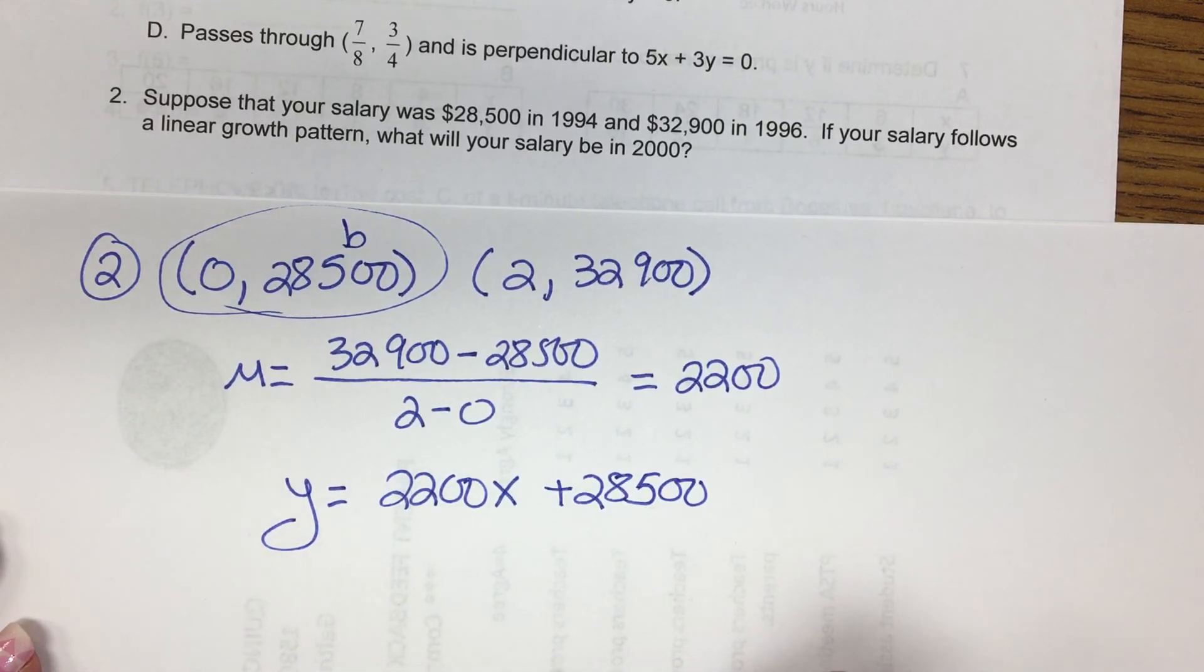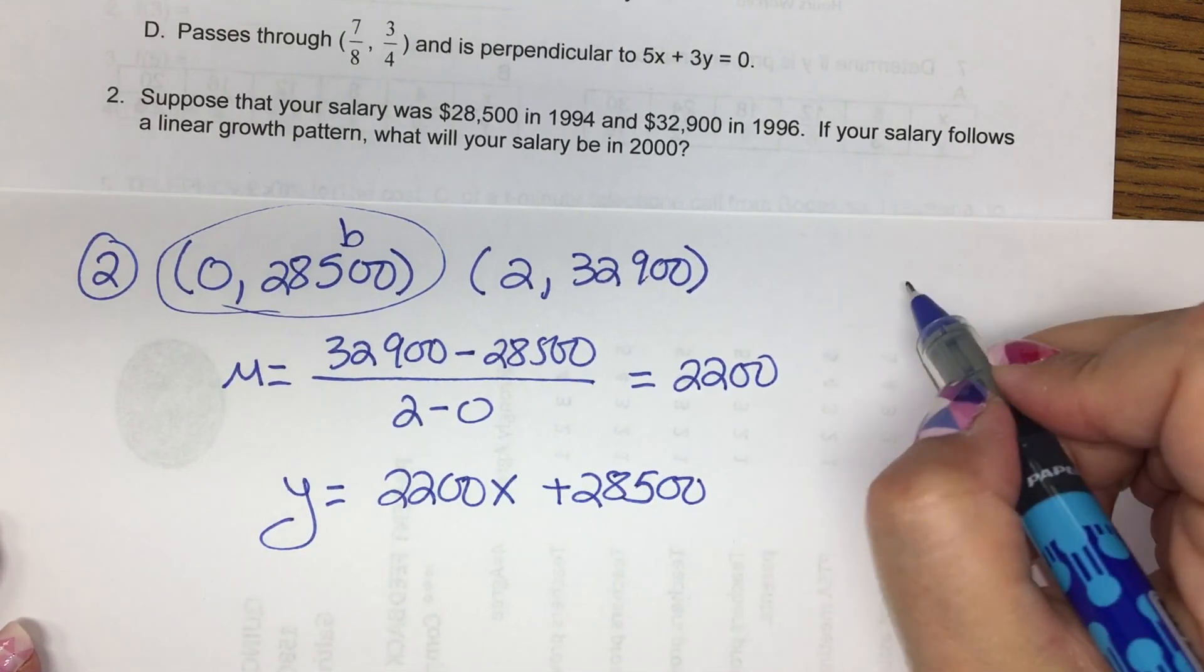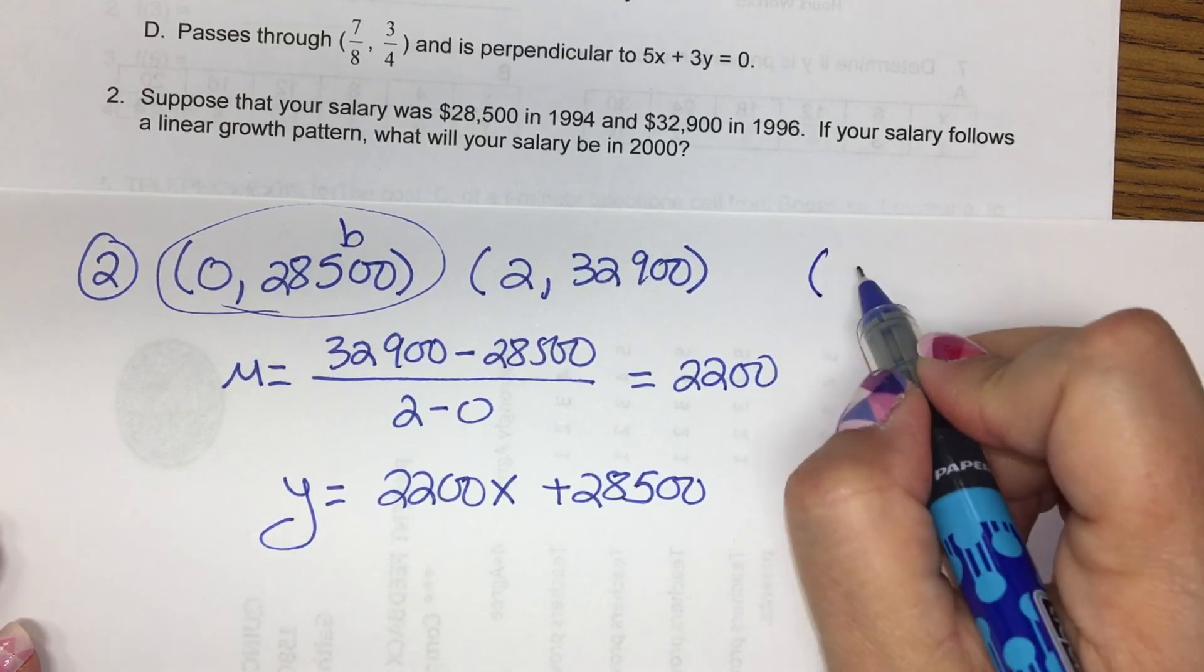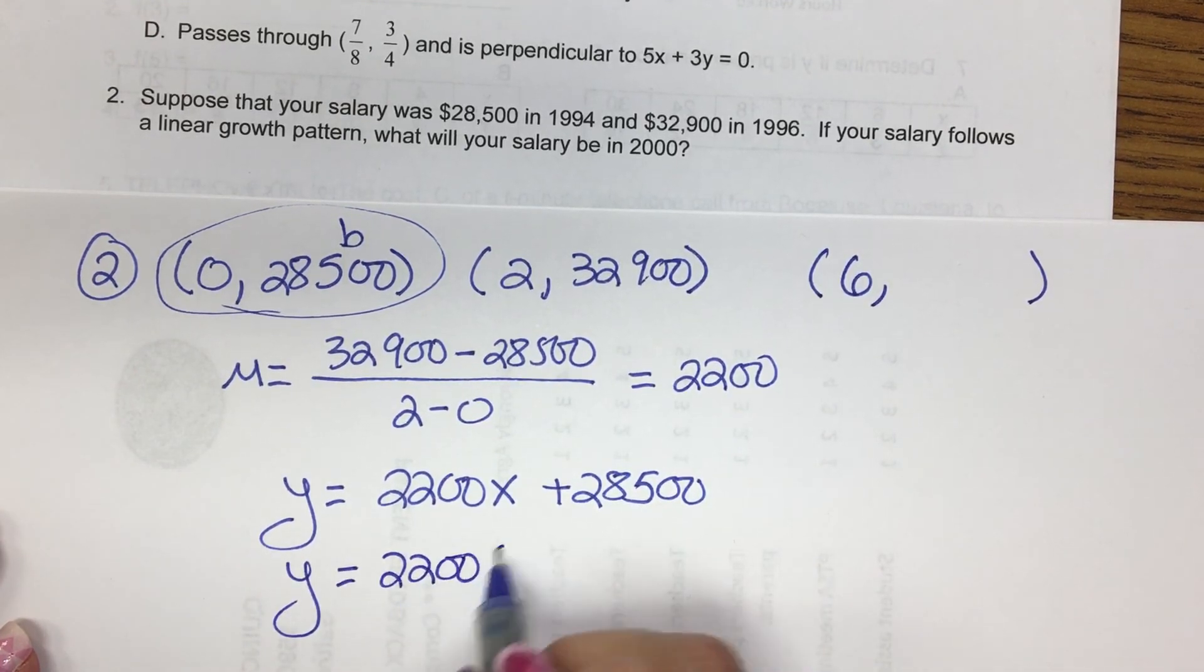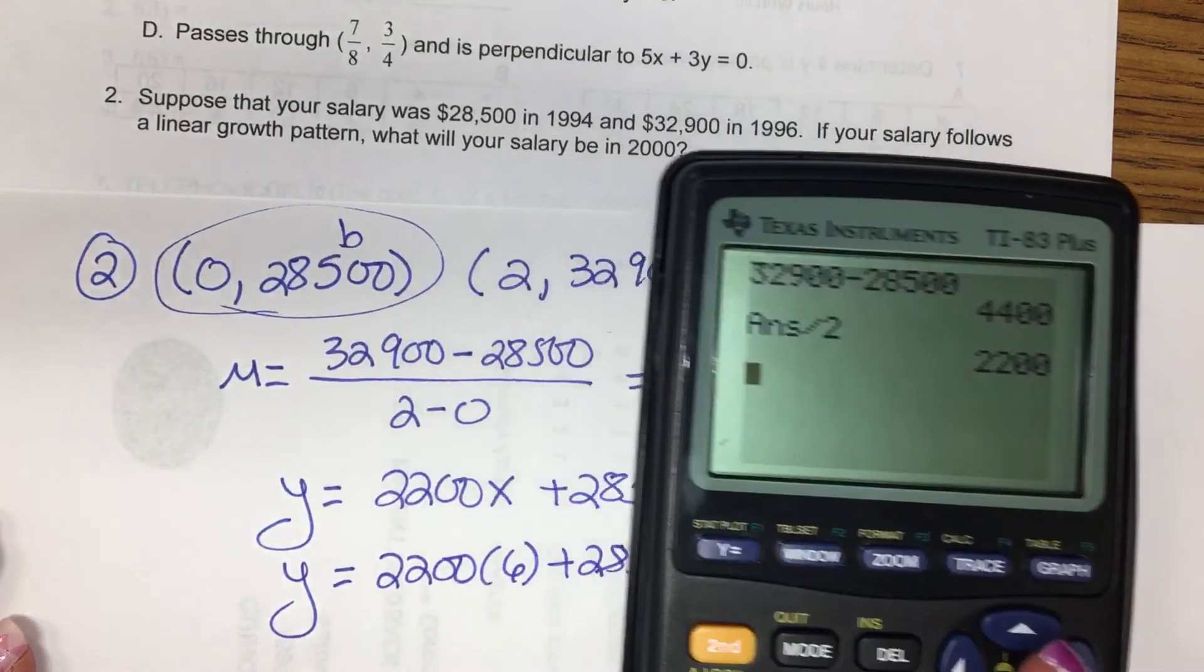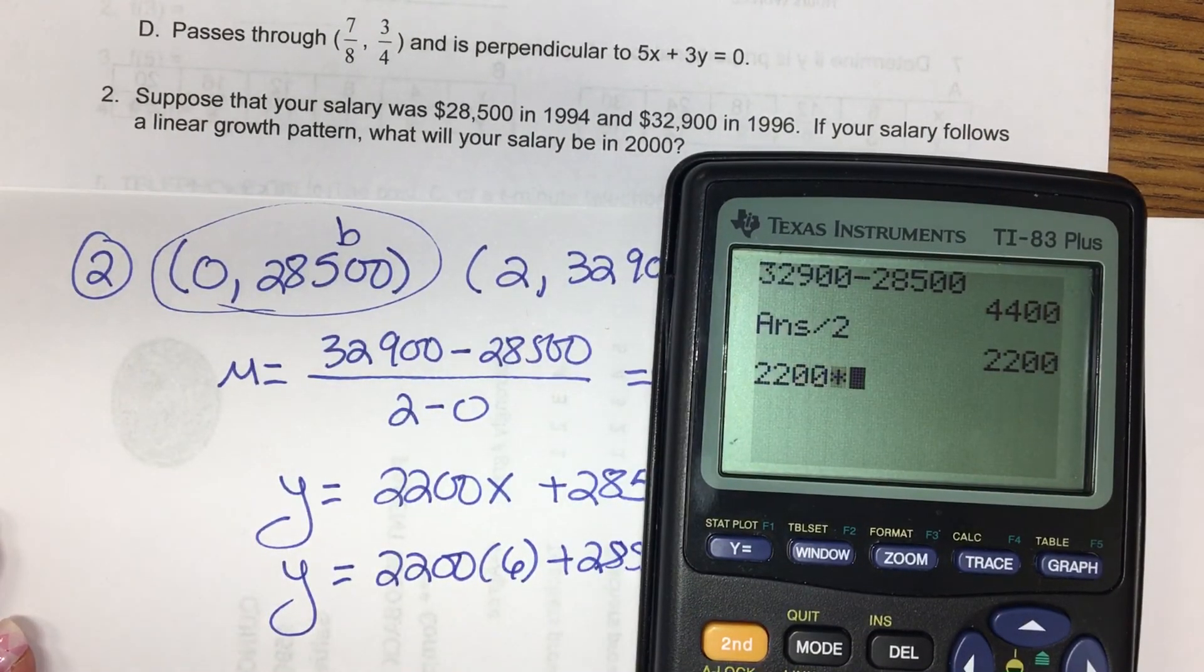Then the rest of the question says, what will your salary be in the year 2000? So the year 2000 is six years past 1994. So I'm going to plug six in to my equation. And we get $41,700.